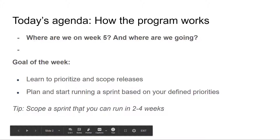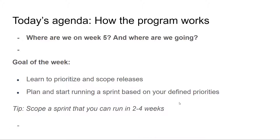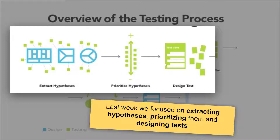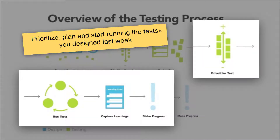A tip here: scope sprints in periods of two or four weeks — this is how it's normally done in software, though for hardware we might adjust some things. This is the overview of the validation process, from generating ideas to focusing on areas you want to prioritize, then designing tests. Last week we focused on going from hypothesis extraction to designing tests that you prioritize.